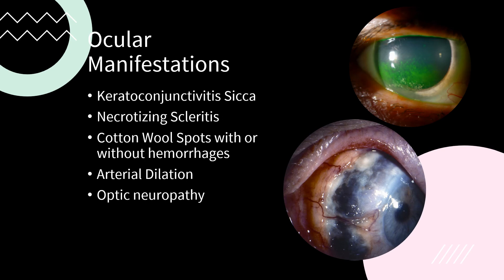Clinical manifestations of lupus vary according to severity, progression, and organ involvement. Ocular signs include keratoconjunctivitis sicca, commonly seen in patients with dry eye syndrome, necrotizing scleritis where the sclera becomes necrotic, cotton wool spots with or without hemorrhages, arterial dilation, and optic neuropathy. In rare circumstances, peripheral corneal thinning and occlusion of retinal arterioles may develop.